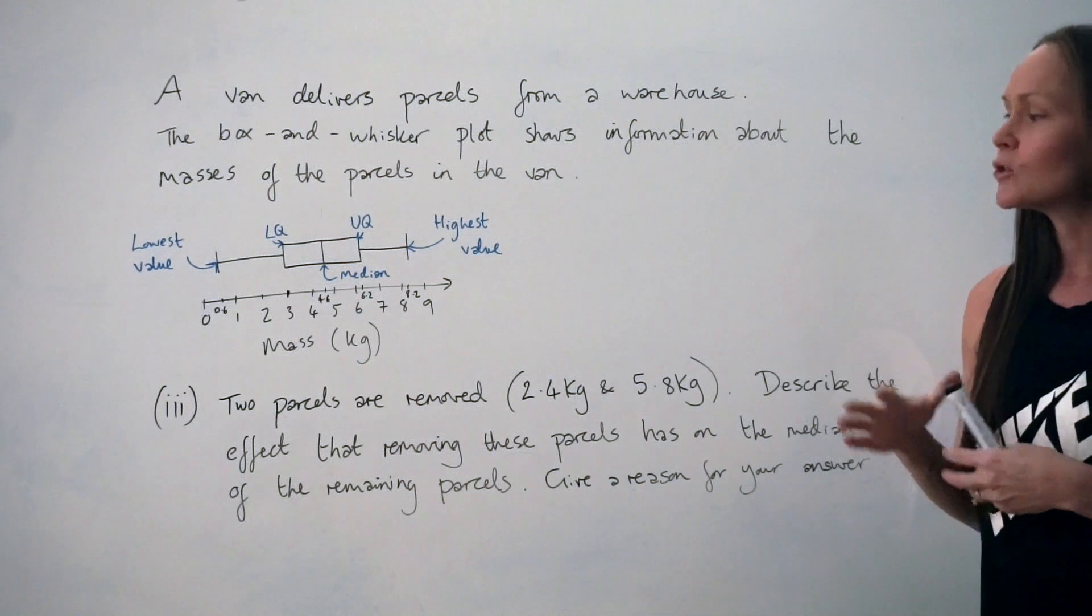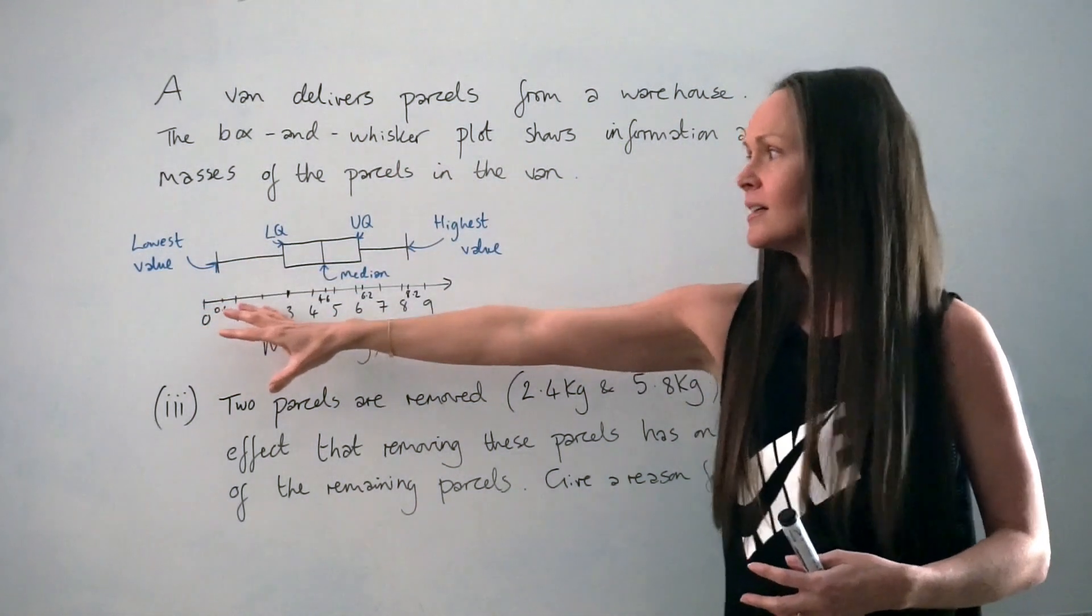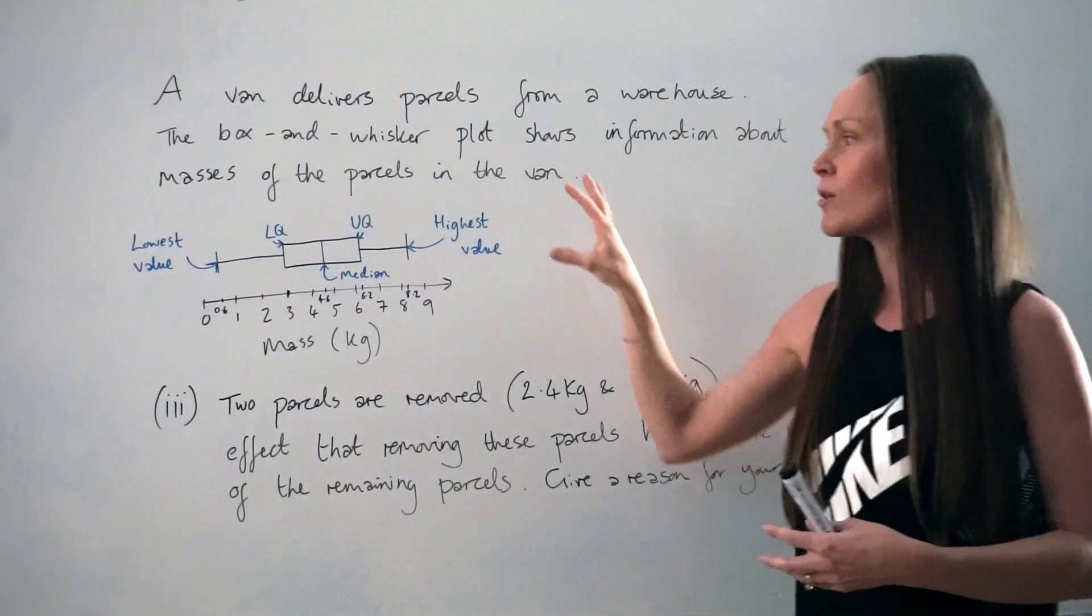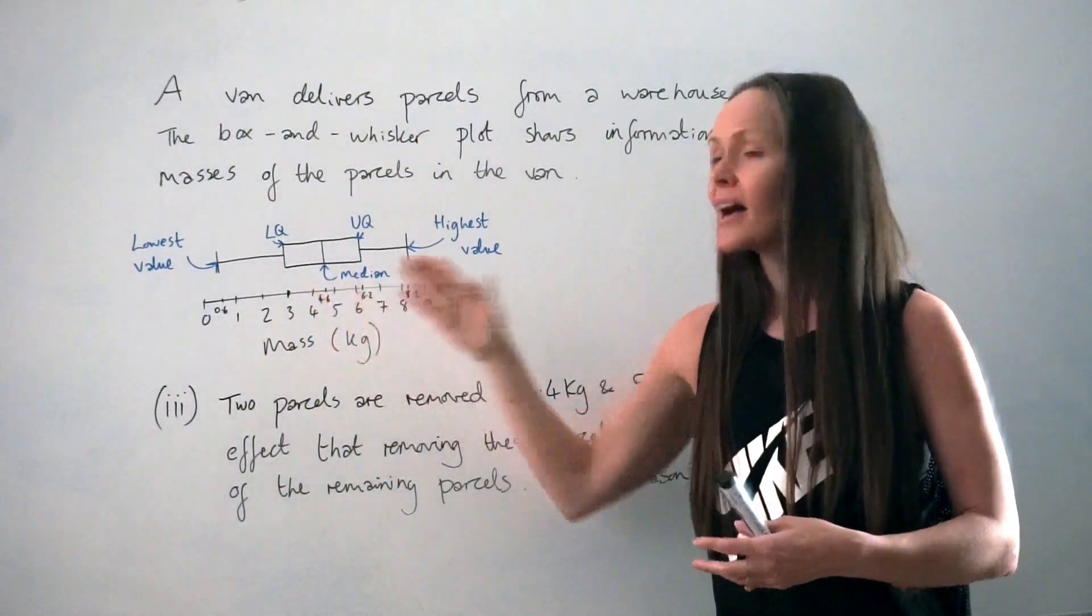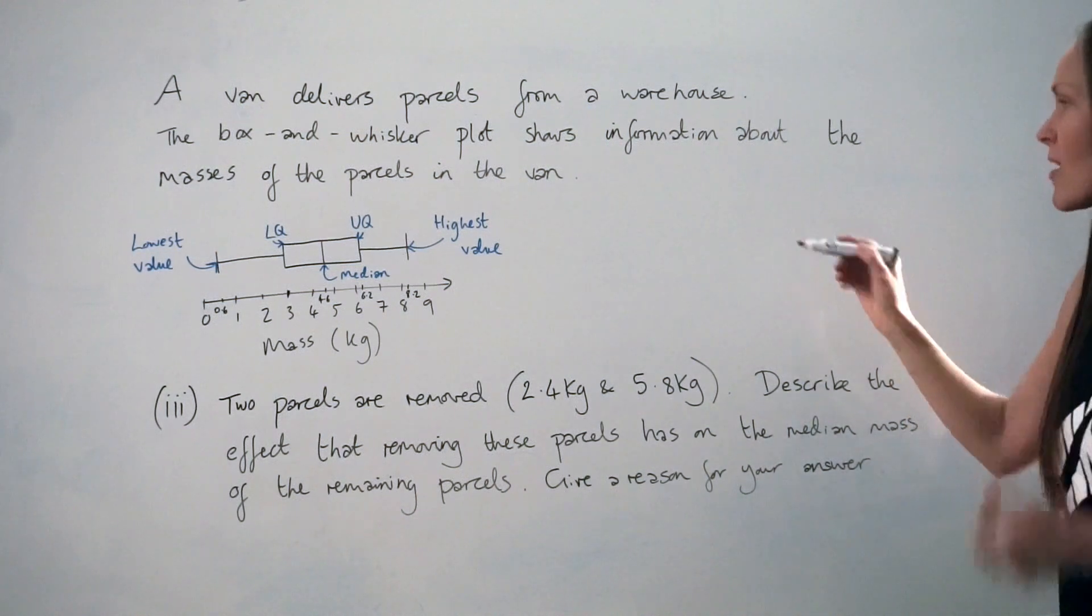And that's all you would write for this exam question. If you were to take two parcels that were smaller than the median, the median would increase. If you were to take two parcels that were greater than the median, the median would decrease. I'll just show you quickly with just some random numbers to show you why.